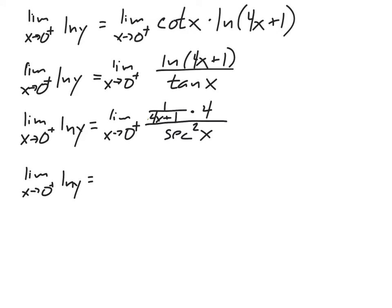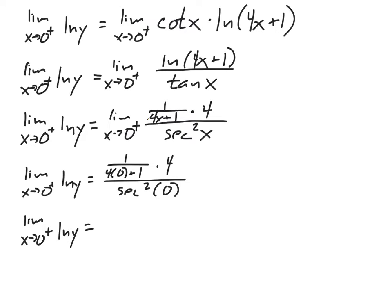The limit on the left-hand side just carries down. On the right-hand side, I try plugging in 0. That gives me 1 over 4 times 0 plus 1, times 4, over secant squared of 0. That simplifies to 1 over 1 times 4, giving 4 on top. Secant is 1 over cosine, and cosine of 0 is 1, so secant squared of 0 is 1. So I get 4 over 1, which equals 4.